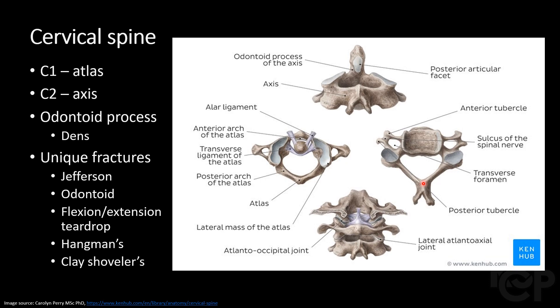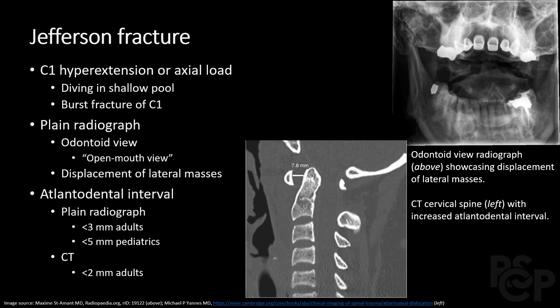A typical cervical spine vertebra is shown here on the right. Keep this anatomy in mind as we begin to discuss the different types of cervical spine fractures. Starting off with a Jefferson fracture — this fracture is unique to C1, the atlas. It is commonly caused by a hyperextension injury or an axial load injury, such as diving headfirst into a shallow swimming pool. This results in a burst fracture of C1.